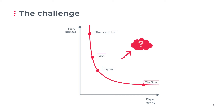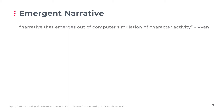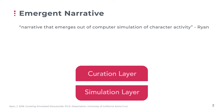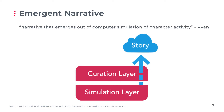So how can we achieve high story richness and high player agency? We believe the answer is emergent narrative. Ryan defines emergent narrative as narrative that emerges out of computer simulation of character activity. Crucially, there is no global control of the narrative, such as a drama manager. Ryan also proposes to split emergent narrative into two layers: curation and simulation. The simulation layer's task is to control the characters in the story world by simulating them as individual agents in order to produce complex character behavior. The simulation layer is not aware of any narrative, nor does it try to create a story. That's the task of the curation layer, which extracts interesting events from the simulation and turns them into a coherent narrative.